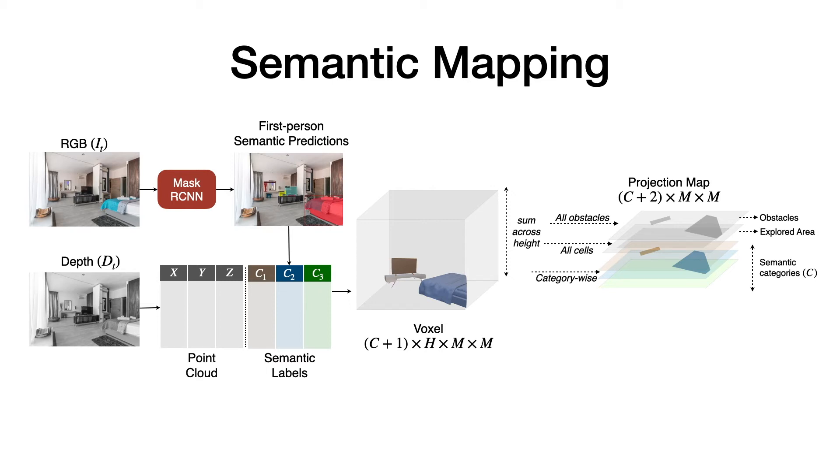Here, small errors in the first-person semantic predictions can lead to large errors in the projected map space. To get rid of those errors, the projected semantic map is then passed through a denoising neural network to get the final semantic map prediction.